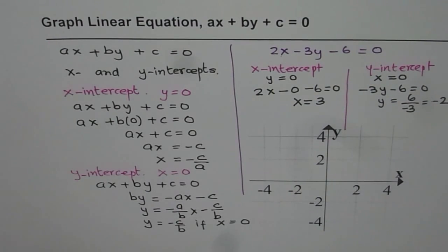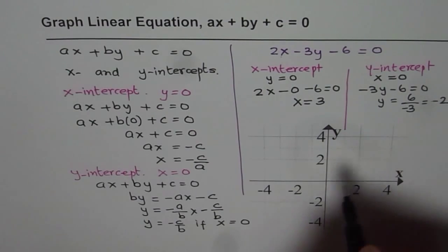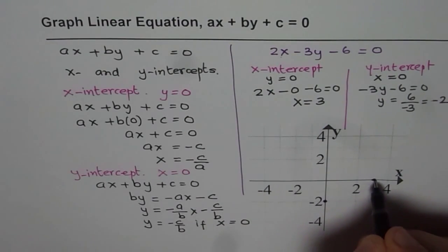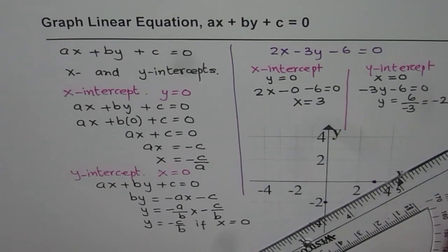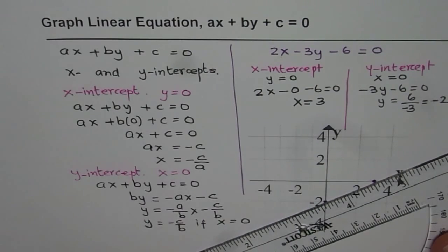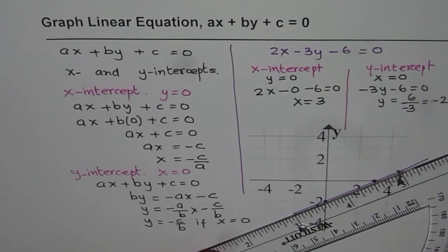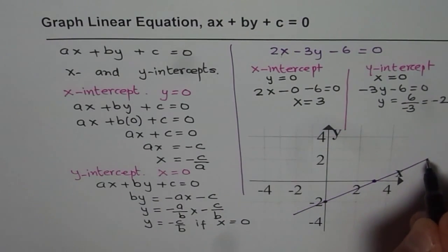Let us plot these points on the graph. The Y intercept is minus 2, which is this point. The X intercept is at 3, which is this point. Joining these two points, we get a line which represents the given equation. That is how we can draw a line representing a linear equation in standard form.